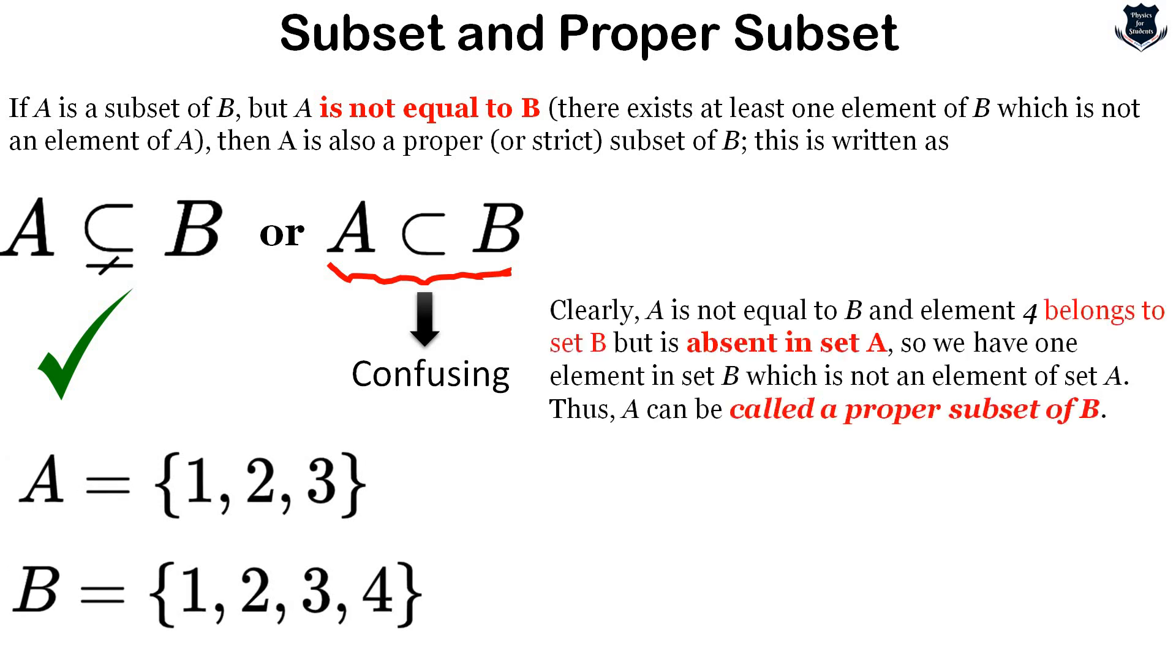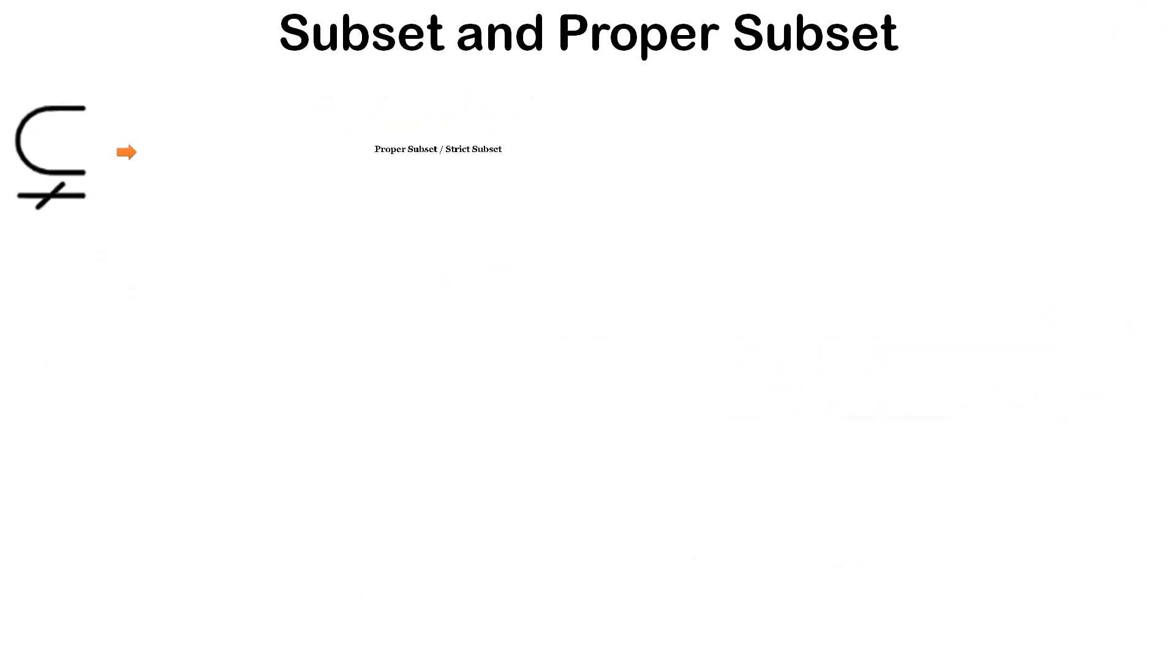For example, if A equals {1, 2, 3} and B equals {1, 2, 3, 4}, then A is not equal to B because element 4 belongs to set B but is absent in set A. So we have an element in set B which is not part of A, and A is called a proper subset of B. This is the best sign to denote it, although some books use other notation.